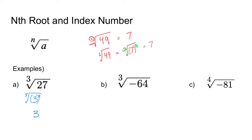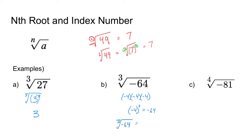What about the third root of negative 64? We're not used to seeing a negative underneath a radical. But what number to the third power will give me negative 64? I know 4 times itself 3 times will give me 64. But negative 4 to the third power will give me negative 64 — it's the only thing that will. So the third root of negative 64 equals negative 4 because negative 4 to the third power gives me negative 64.